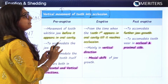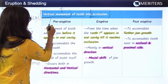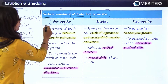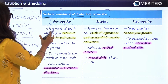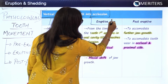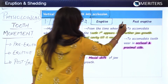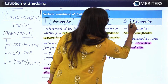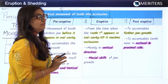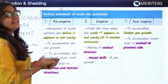Now let's study the physiological tooth movements, which are basically categorized into three: first is the pre-eruptive stage of movement, second is the eruptive stage, and third is the post-eruptive phase of physiological tooth movement.